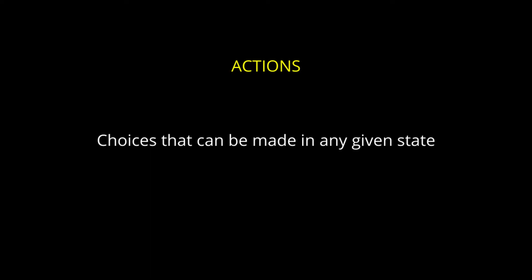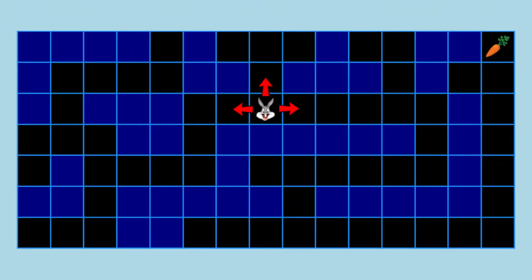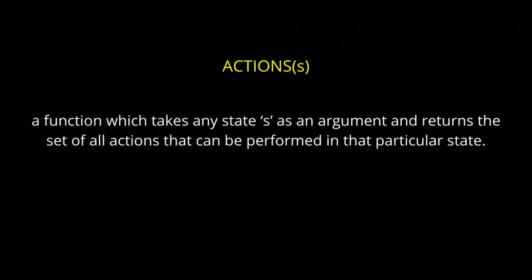Choices that can be made in any given state are known as actions. Here Bugs Bunny can take one of three different possible actions. The action function takes any state as an argument and returns the set of all actions that can be performed in that particular state.